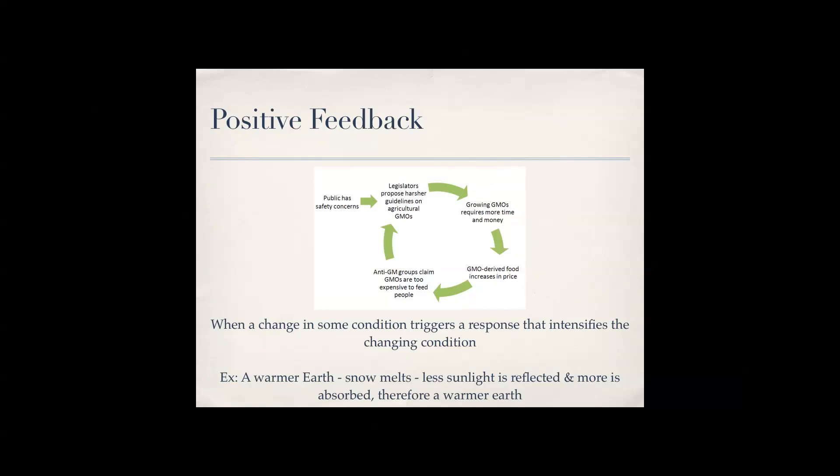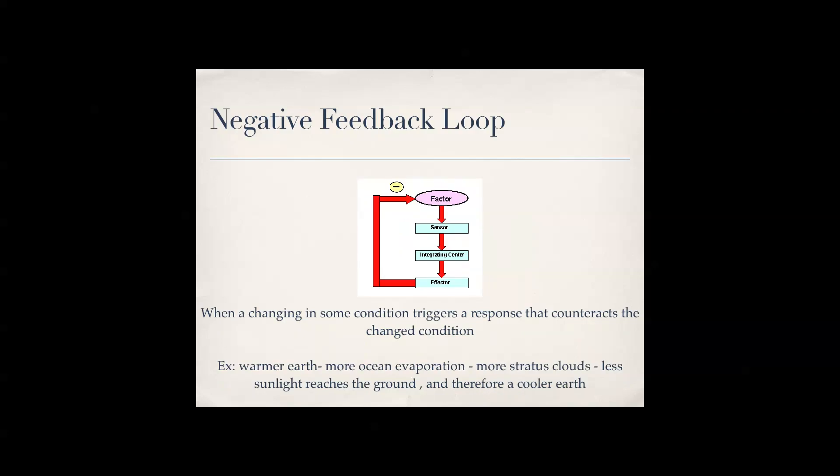Positive feedback is when a change in a condition triggers a response that intensifies the changing condition — for example, a warmer earth causes snow to melt, less sunlight is reflected, more is absorbed, and you get an even warmer earth. Negative feedback is when a change triggers a response that counteracts the change — a warmer earth causes more ocean evaporation, more stratus clouds, less sunlight reaches the ground, and therefore a cooler earth. Think: positive feedback strengthens the change, negative feedback counteracts it.